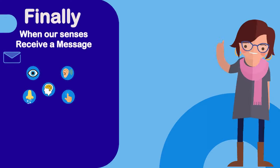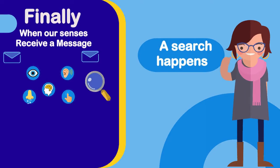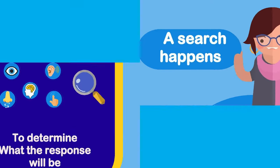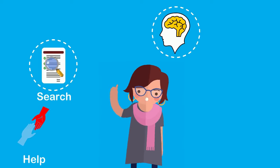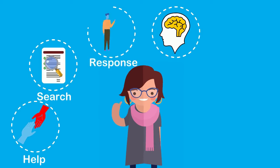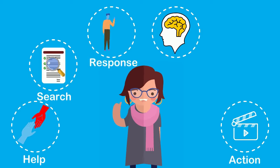Finally, when our senses receive a message, a search happens to determine what the response to the message will be. For example, when you bang your head, the search and response may be to sit down or call for help. Search and response organizes your actions, telling your body exactly what to do.